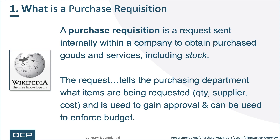First up, what is a purchase requisition? The purchase requisition is a request set internally within a company to obtain purchased goods and services, including what could be stock if you have inventory. The request tells the purchasing department what items are being requested — quantity, supplier cost — and is used to gain approval, a very important concept, and can be used to enforce budget. In Fusion, you really want to use the requisition on the front end to get approval rather than trying to pick that approval up in an agreement, a contract, an order, etc.